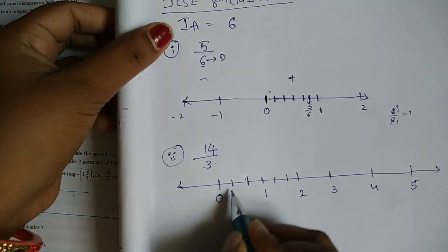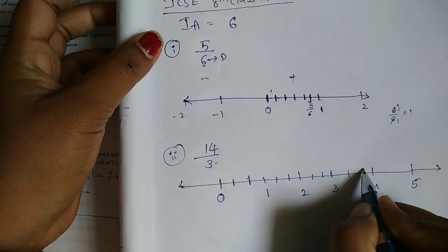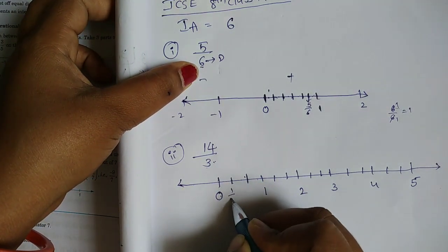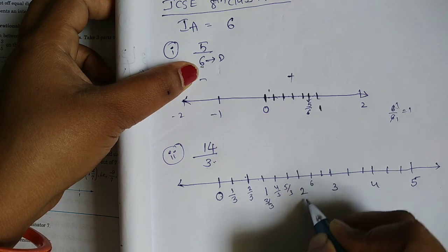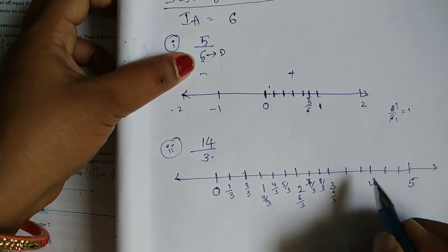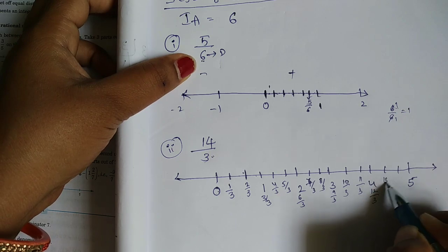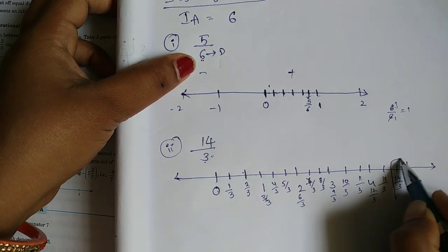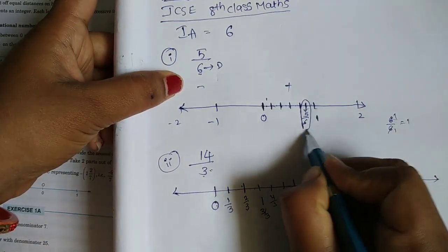We have 3 lines in the middle. Here are the fractions: 1 by 3, 2 by 3, 3 by 3, 4 by 3, 5 by 3, 6 by 3, 7 by 3, 9 by 3, 10 by 3, 11 by 3, 12 by 3, 13 by 3, 14 by 3. We have 14 by 3 — that is our answer.